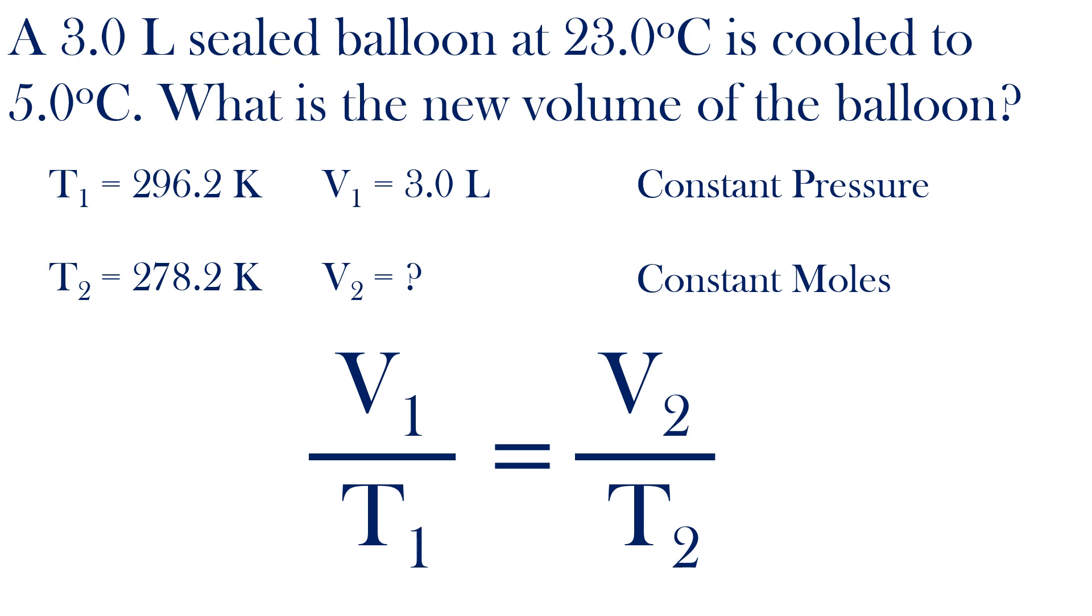I'll multiply both sides by T2, and this will cancel the T2 on the right side, leaving V2 by itself.